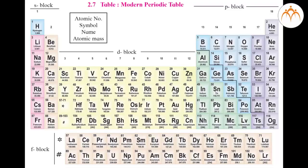As we go from top to bottom in a particular group, the metallic character increases and the non-metallic character decreases. This is because the atomic size increases as we go from top to bottom — every time a new shell is added, the valence electron is further away from the nucleus. So it is easier to remove that electron from the valence shell as the distance between the nucleus and the valence electron goes on increasing.